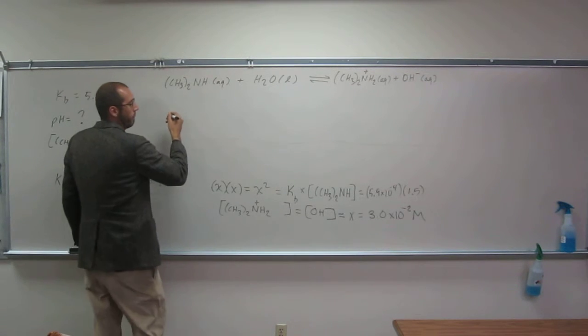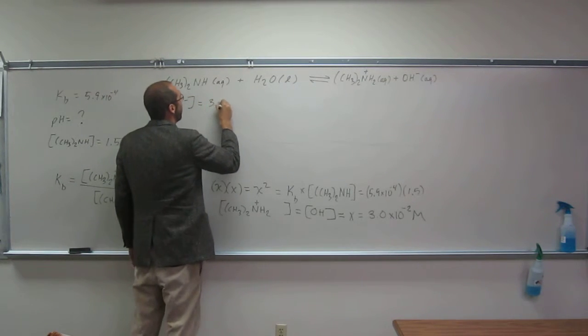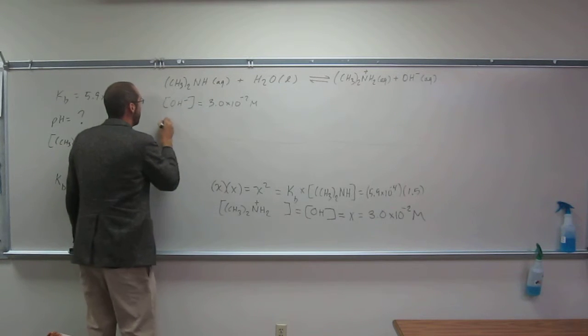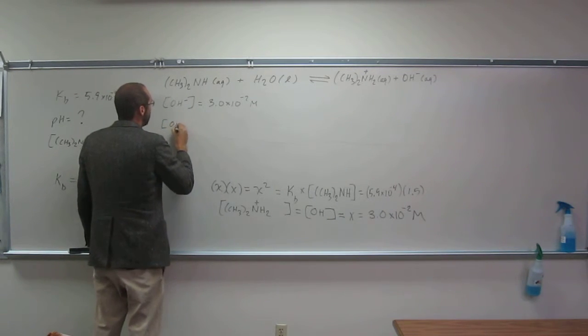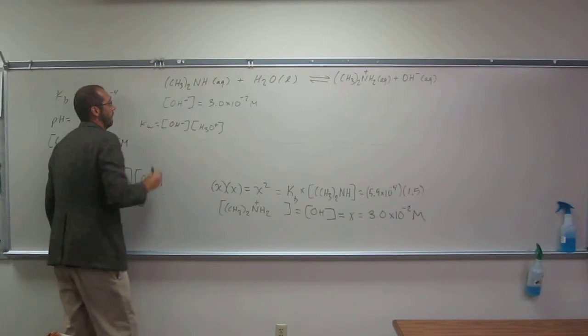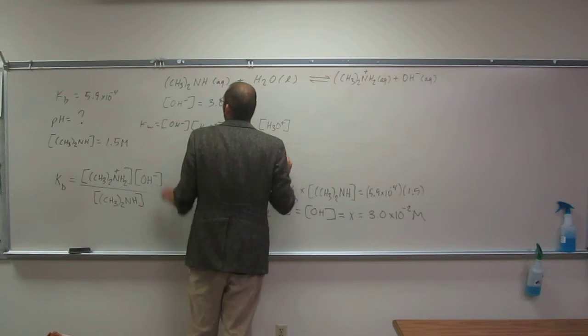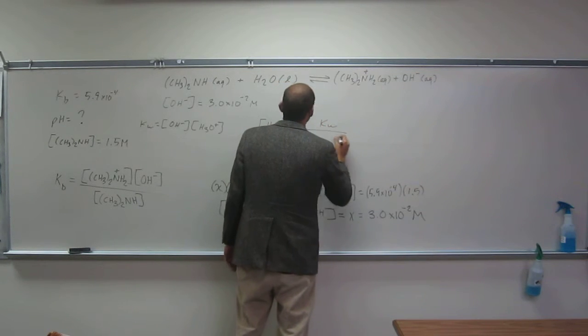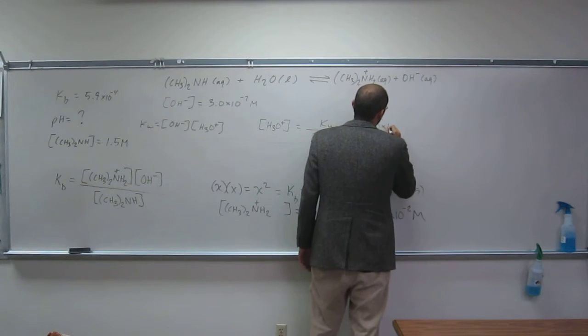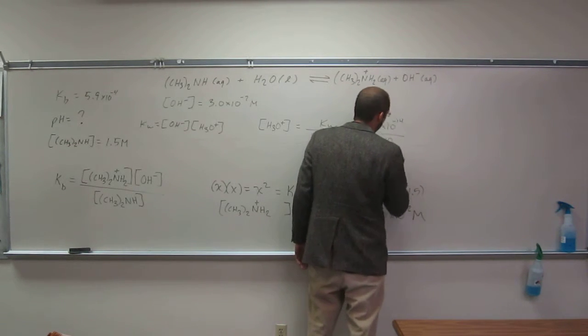Okay. So what do we got? The concentration of OH minus equals... So concentration of H3O plus equals Kw, right? So to figure out what the concentration of H3O plus is, it's going to be Kw divided by concentration of OH minus. Kw of course is 1.0 times 10 to the negative 14 divided by 3.0 times 10 to the negative 2.